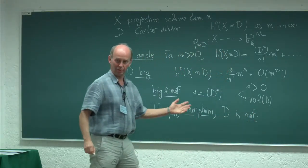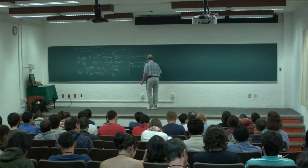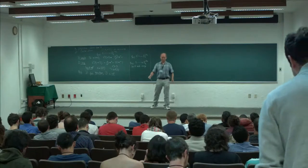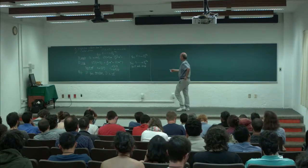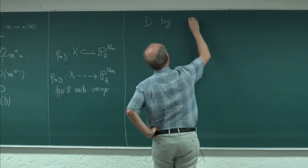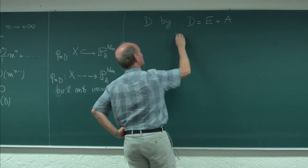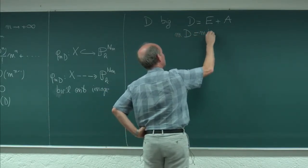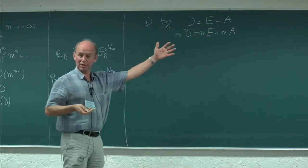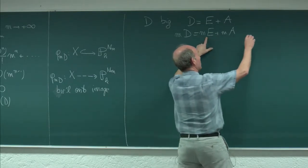Let me prove that the map is generically finite onto its image. I won't prove that it's birational; I'll just prove it is generically finite. The idea is simple: if D is big, we saw that we can write D as effective plus ample. So mD will be mE plus mA, and in particular among the sections of mD you have the sections of mA times something. Since E is effective, this implies an inclusion.